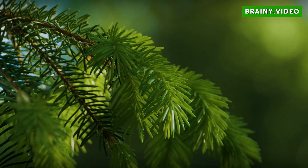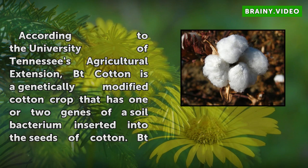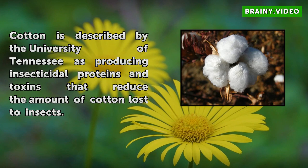What is Bt cotton? According to the University of Tennessee's Agricultural Extension, Bt cotton is a genetically modified cotton crop that has one or two genes of a soil bacterium inserted into the seeds of cotton. Bt cotton is described by the University of Tennessee as producing insecticidal proteins and toxins that reduce the amount of cotton lost to insects.